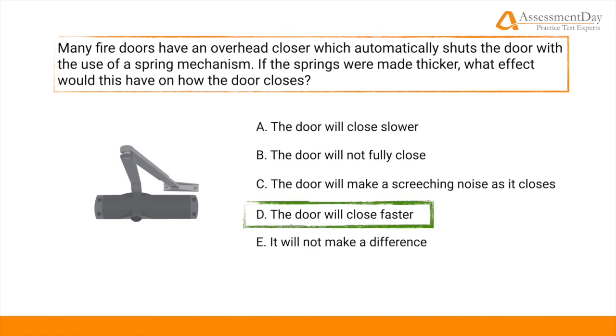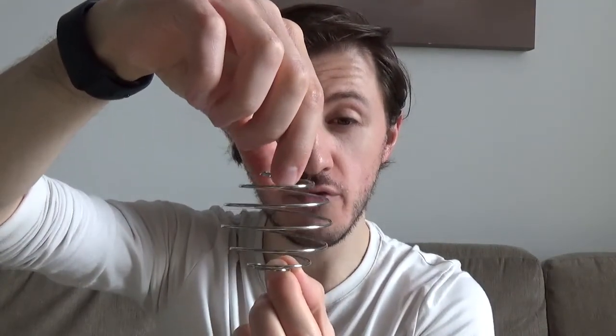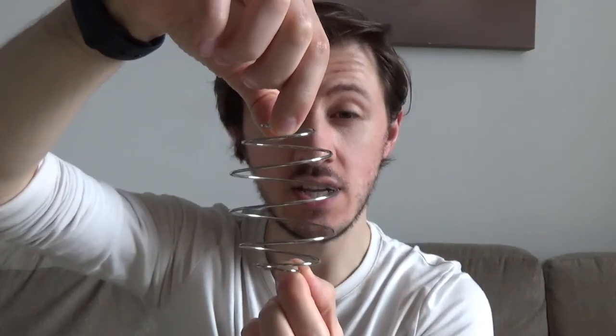If you said D, then you'd be correct. Let's explain why. Here I have two metal springs to showcase what's going on inside a fire door closer. When a force is applied to a metal spring, it has a resistant force to return it to its original form. As you can see with the thicker spring, it requires greater levels of force to change, and as a result the resistant force is equally a lot stronger than the smaller spring. Let's take a look at some fire door closers in action.